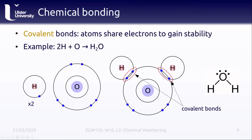If instead of swapping electrons, two atoms share electrons to obtain full valence shells, they form what is called a covalent bond. We can see this with the example of water. Hydrogen has a single valence electron, and oxygen has six valence electrons — so oxygen is two electrons short of a full valence shell. Two hydrogen atoms combine with an atom of oxygen by sharing electrons in a covalent bond.